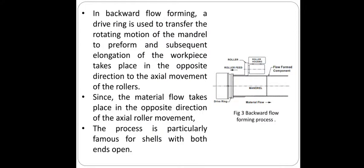In backward flow forming, a drive ring is used to transfer the rotating motion of the mandrel to the preform, and subsequent elongation of the workpiece takes place in the opposite direction to the axial movement of the rollers. The material flow and roller feeding are in opposite directions, as shown in the figure. This process is particularly suited for shells with both ends open.